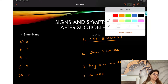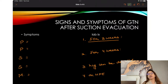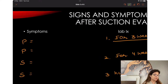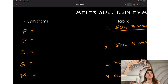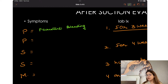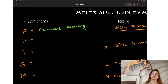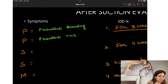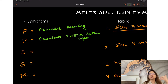What are the signs and symptoms of GTN after suction evacuation? For symptoms, remember the mnemonic PSM: P stands for persistent bleeding. If a patient has persistent bleeding after H mole evacuation, you should suspect GTN. Or if there is a persistent theca lutein cyst — normally a theca lutein cyst should regress, but if it persists, suspect GTN.